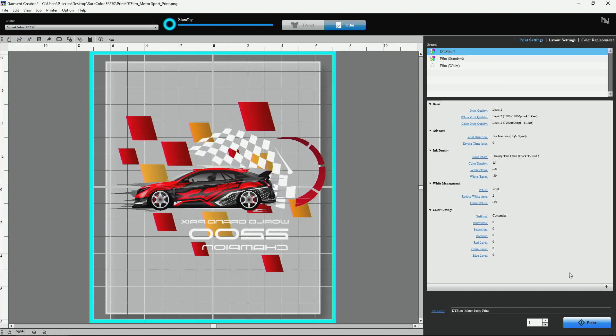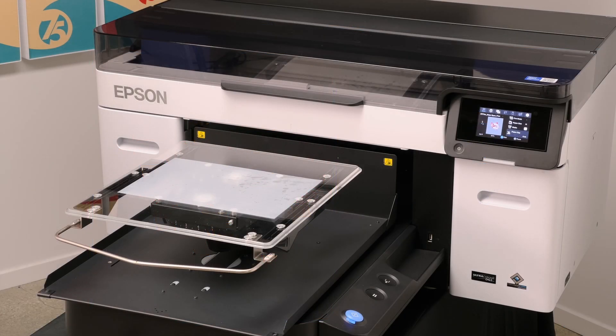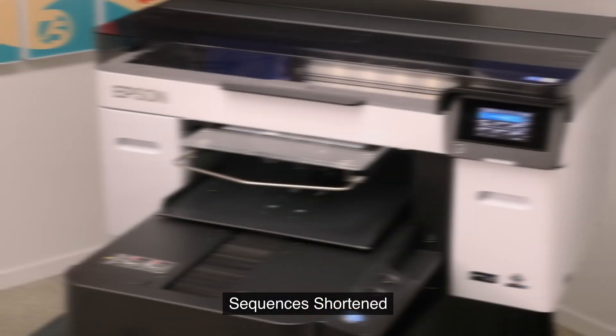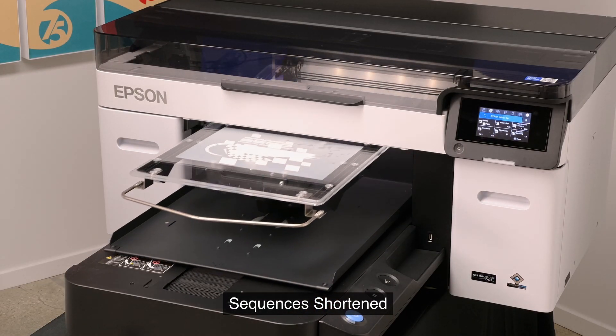Now press the Print button. Press the blue button on the printer to begin the print job. The printer will print CMYK followed by white.